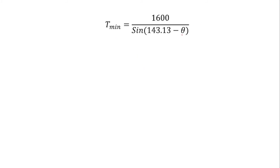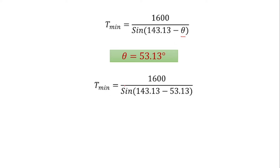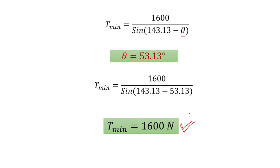To calculate the minimum tension, substitute theta equals 53.13 into the equation: T minimum equals 1600 divided by sine of (143.13 minus 53.13) equals 1600 divided by sine 90 equals 1600 Newton. So the minimum tension required is 1600 Newton at an angle of 53.13 degrees. This is a very important question from an exam point of view. If you have any doubt, write it in the comment box. Please like, share, and subscribe to our channel. Thank you very much.